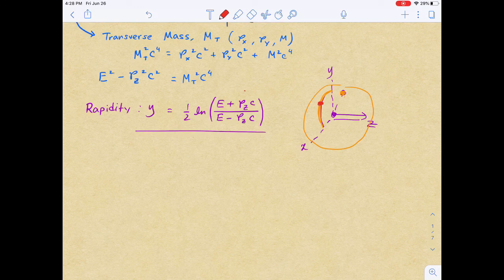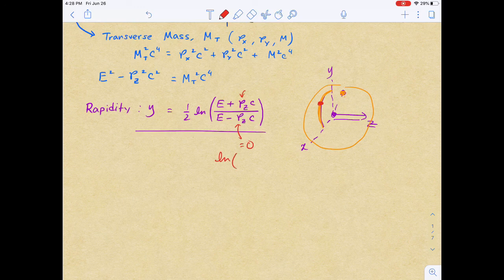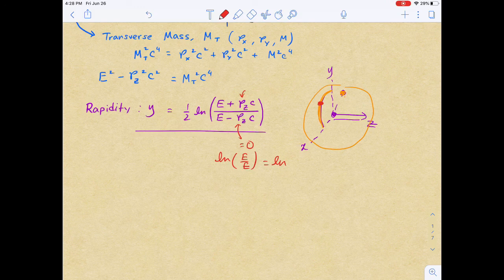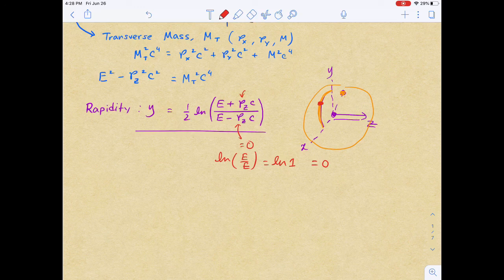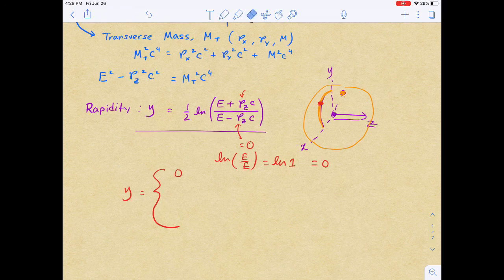If it is entirely in the xy plane, let's say the particle is here where z equals zero, then the momentum terms will basically equal zero. You have natural log of E by E, which is natural log of 1, which is zero, so you get the rapidity to be zero.